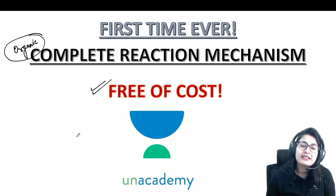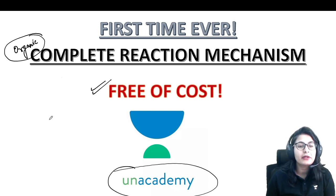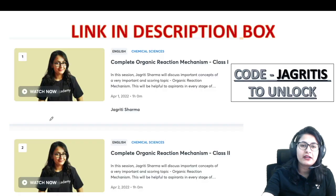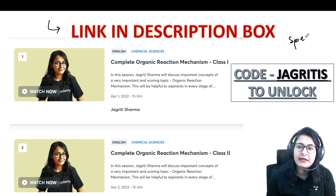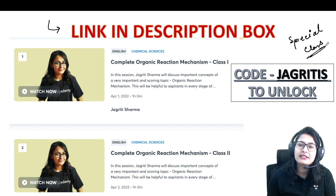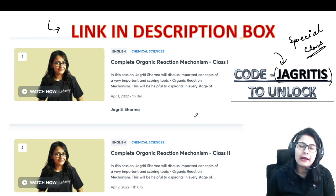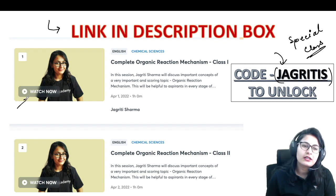This is completely free of cost for all of you, and this is what I'm doing on Unacademy. You can visit my profile on Unacademy and the link is in the description box. I am talking about all the special classes — a special class is a live class conducted for free on Unacademy. You just have to use the code JAGRITI S to unlock it while downloading the app and watching my special class.